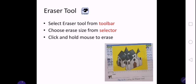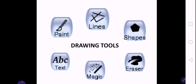The next tool is the eraser tool. When you select the eraser tool from the toolbar, on the right side you can see different sizes and shapes of the eraser. You can select any shape or size from the selector, and then click and hold the mouse to erase the area of the picture which you want to erase.